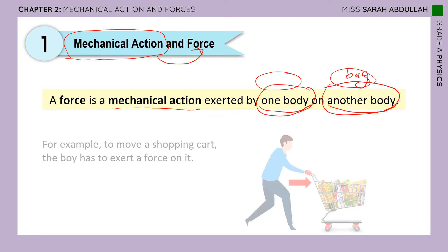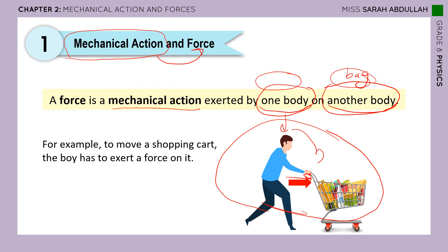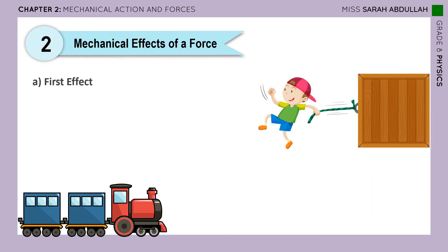For example, to move a shopping cart, the boy has to exert a force on it. In order to actually move this cart, we have to push it — exert some kind of force on it. So the boy is the first body, and the second body that the force is exerted on is the cart. A force is a mechanical action exerted by one body on another body.